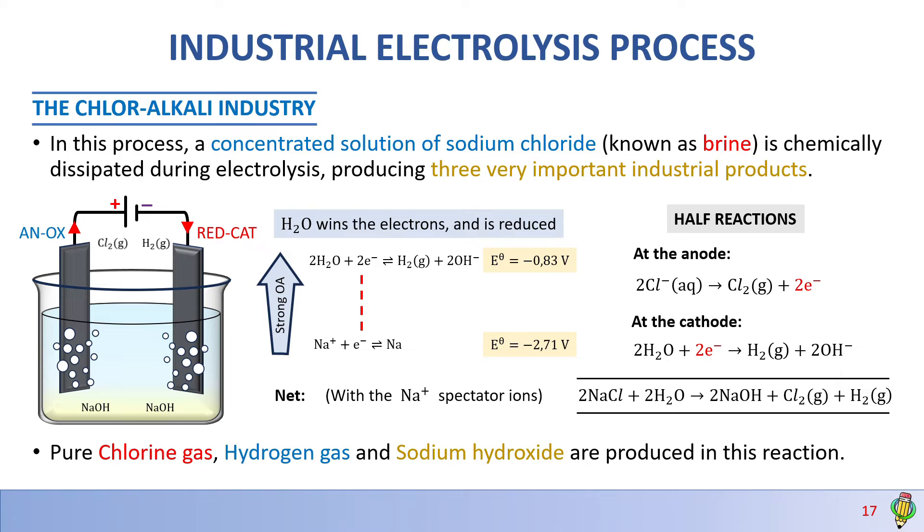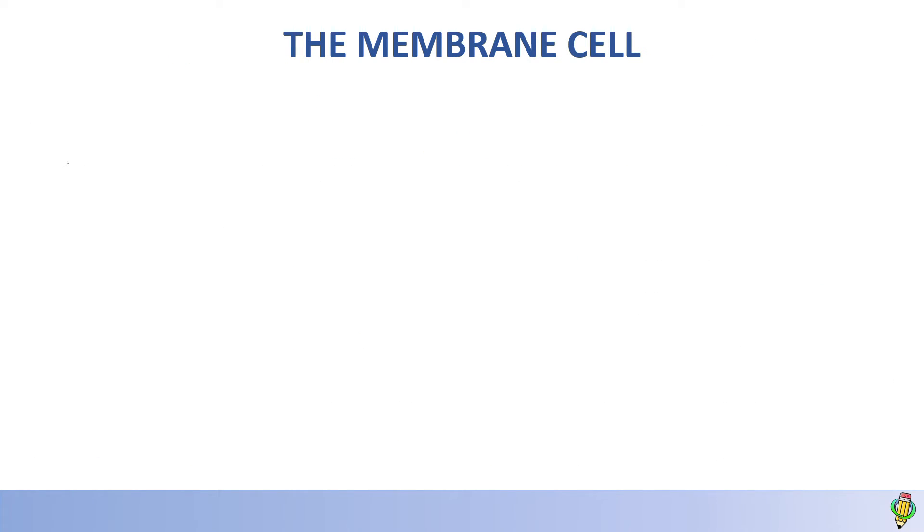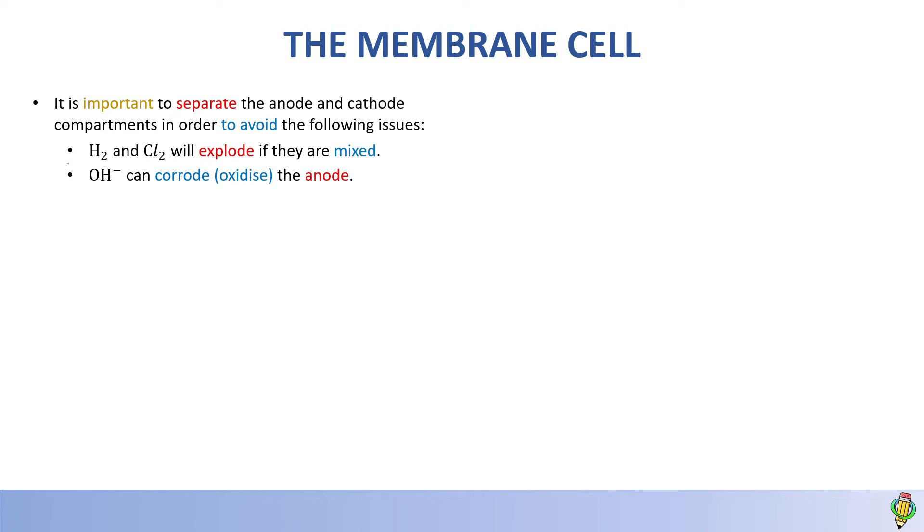But chemists realize this setup is not very effective, so we create the membrane cell. It's important to separate the anode and cathode compartments to avoid issues. If hydrogen and chlorine gas mix, they will explode, and hydroxide ions can corrode the anode. If chlorine gas reacts with sodium hydroxide, this forms sodium hypochlorite, which is not desirable.